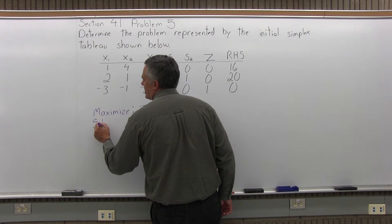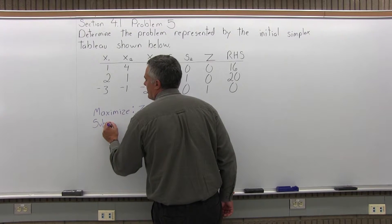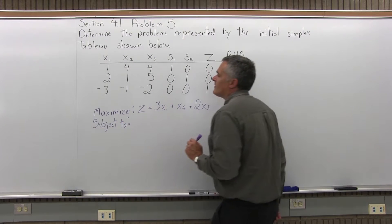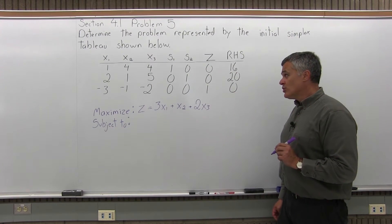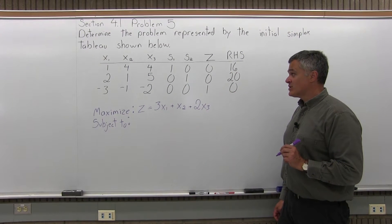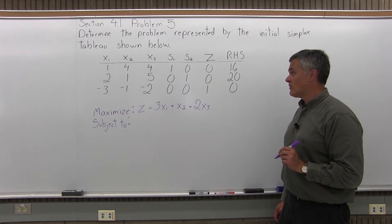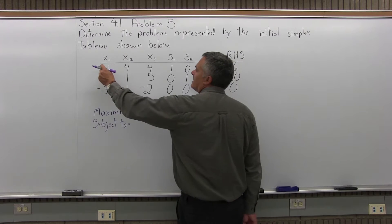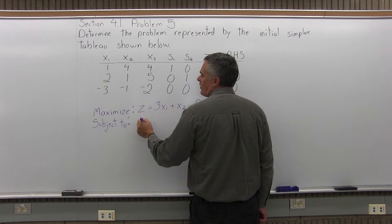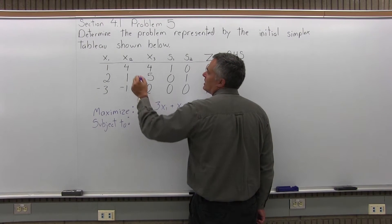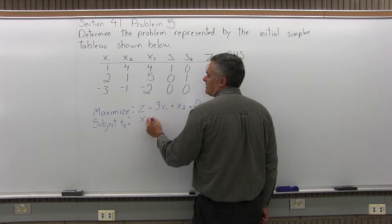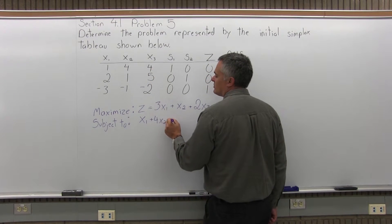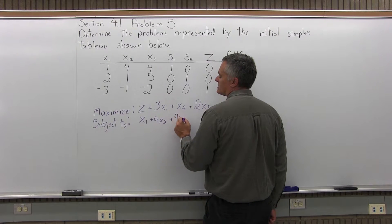So underneath the maximize, I will have subject to. And now, the top row of my initial simplex tableau is 1, 4, 4, 1, 0, 0, 16. The 1 is in the X1 column, so it would have had 1X1, or just X1. I have a 4 in the X2 column, so it would have come from 4X2. I have a 4 in the X3 column, so it would have come from 4X3.